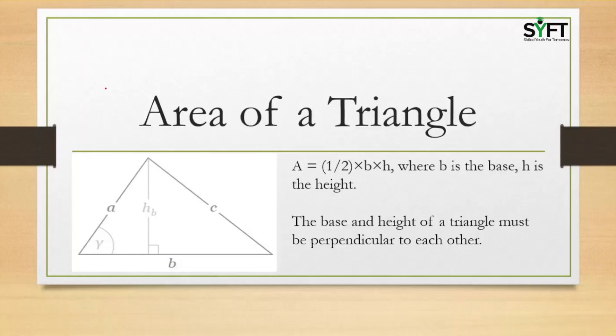Here is an example of a triangle. Here b is the base and h is the height, and this base and height are perpendicular to each other.